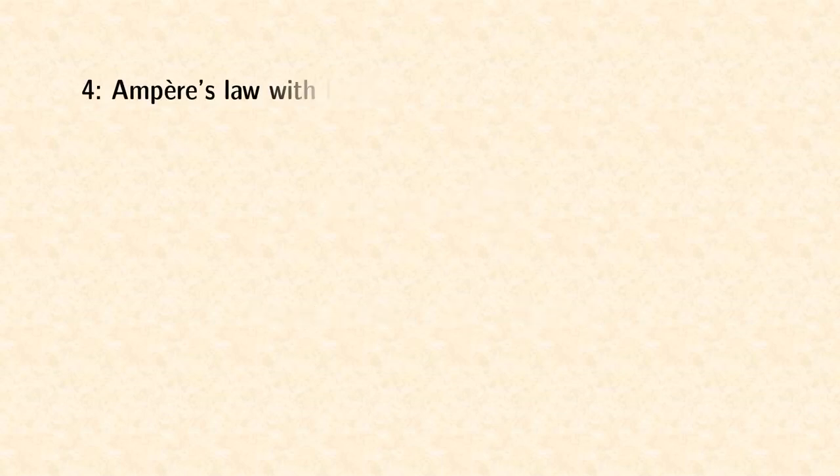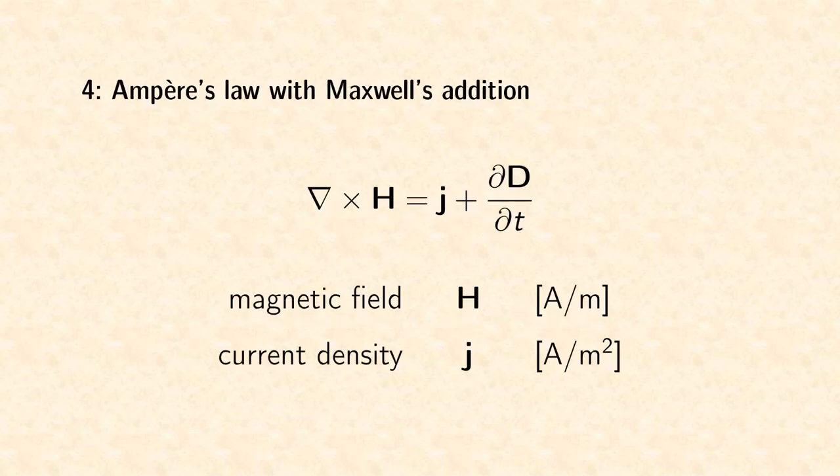The fourth equation has two parts. Ampere's law describes the generation of a static magnetic field by an electric current density. And the second is the counterpart to Faraday's law. It describes how the variation of an electric field induces a magnetic field. The result is a magnetic field in closed loops.